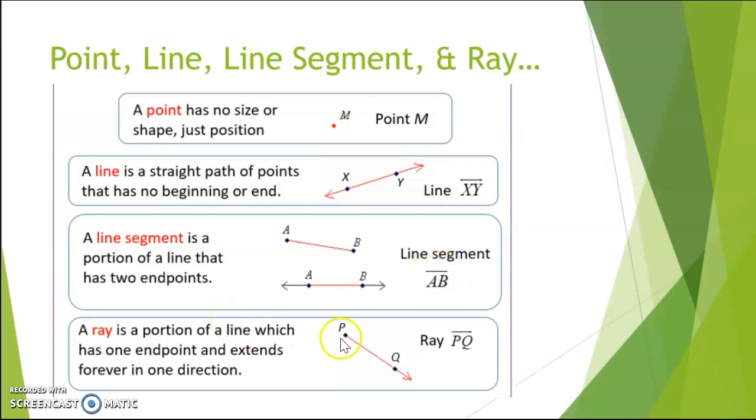A ray starts with one endpoint, but then extends on forever in one direction. So again, really tiny right here, on top of the Q, which is where it extends on forever past Q, there is a little arrow in that notation.